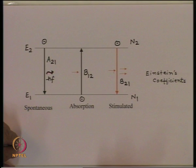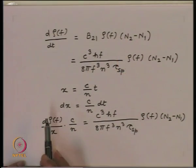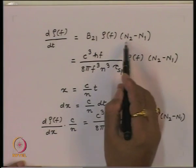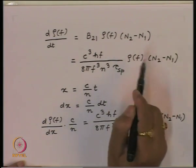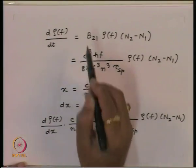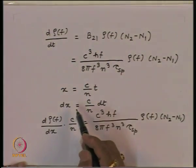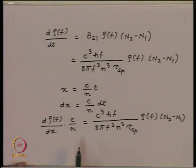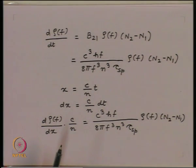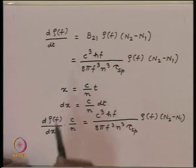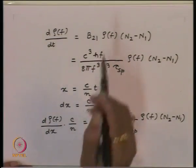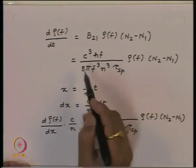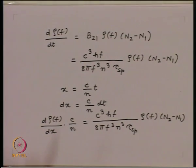With this understanding, we wrote the equation for the growth of the photon. The rate of change of the photon flux is the difference of the downward transition and the upward transition. This is the probability of the transition, this is the density of the photon flux, and N2 and N1 are the electron densities in the upper and lower energy states. We also found from black body radiation that the quantity B21 can be written in terms of the spontaneous lifetime tau_sp.